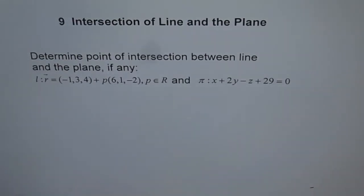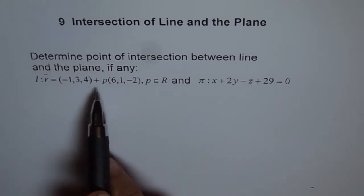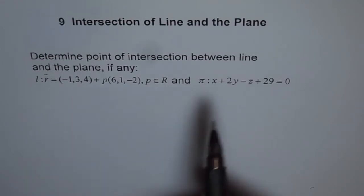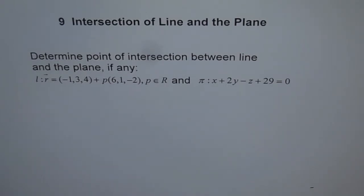Now to find the intersection of line and the plane, the best way is to write this in the parametric form, so you get x, y, and z, and substitute those values here in this equation and find the value of p, the parameter, and then plug in p and get the points.